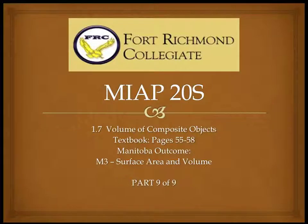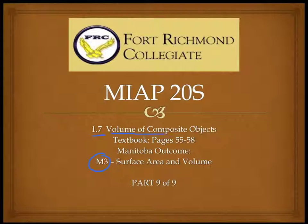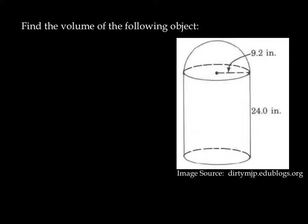Here's our ninth and final video on outcome M3, surface area and volume. This is going to deal with part of section 1.7, which deals with the volume of composite objects. We're only going to do one example: find the volume of the following object.